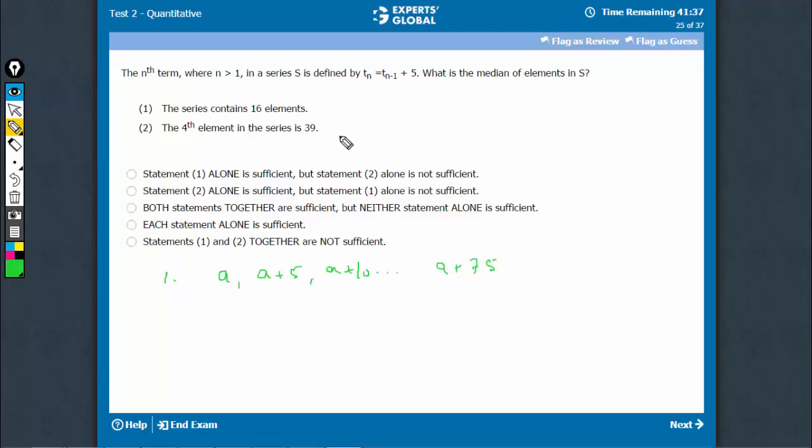A is not known, therefore statement 1 is not sufficient. Statement 2 only means that the fourth element is 39. It only means that the fourth one is 39, and therefore nothing else is known.